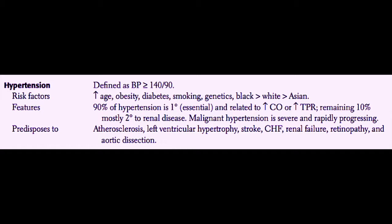90% of hypertension is essential or primary hypertension and is commonly related to increased cardiac output or increased total peripheral resistance. The remaining 10% of hypertension is mostly secondary to renal disease or some other secondary cause.